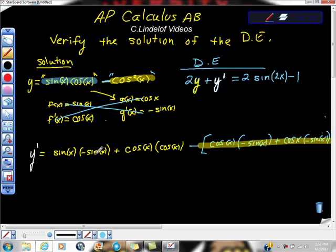We have sine of x times negative sine x is negative sine squared x. Plus, cosine x times negative sine x is negative sine x cosine x. If I do this one over here, same thing. So I'm going to get negative two cosine x sine x. Can you see it?